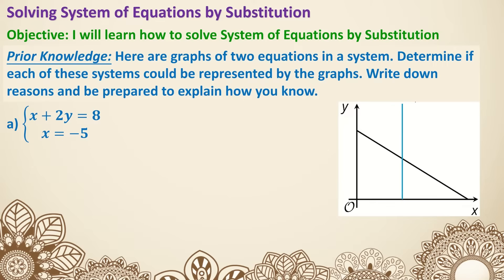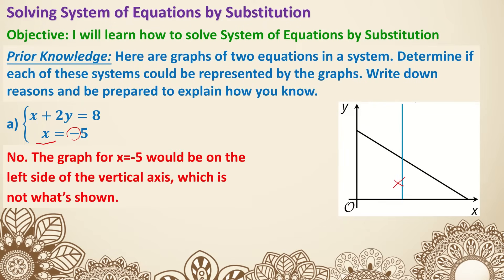For A: x plus 2y equals 8, x equals negative 5, and this is the graph on the right side. If you think about x equals negative 5, it means it has to cross the x-axis, so it's supposed to be a vertical line — which yes, it is a vertical line. However, it's x equals negative 5, which means it's supposed to be on the negative side of x, and this graph clearly is not on the negative side of x. So that cannot represent — no, the graph for x equals negative 5 will be on the left side of the vertical axis, which is not what's shown.